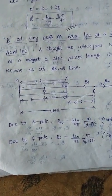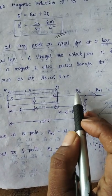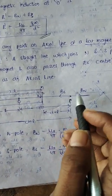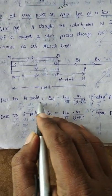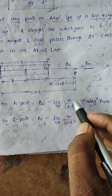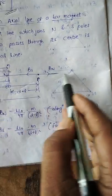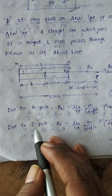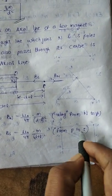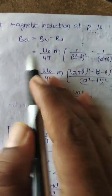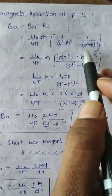At point P, the field due to the north pole BN is directed away from the north pole, and the field due to the south pole BS is directed towards the south pole. Both BN and BS are opposite in direction, so the net field at P is BN minus BS. BN equals mu_0 by 4pi into M by (D minus L) squared, along N to P. BS equals mu_0 by 4pi into M by (D plus L) squared, from P to S. Net magnetic induction at P is mu_0 by 4pi into M times [1/(D minus L)^2 minus 1/(D plus L)^2].